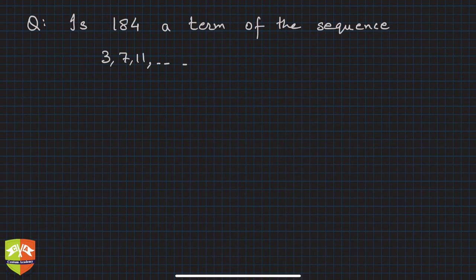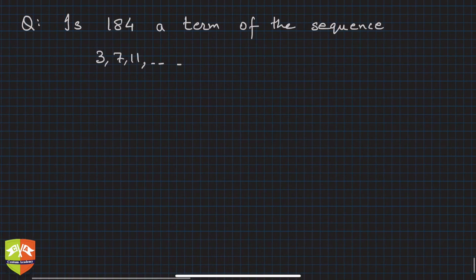Hey, welcome friends, once again to another problem-solving session on arithmetic progression. In this question, we have a different variety of problems. The problem says: Is 184 a term of the sequence 3, 7, 11, dot dot dot?